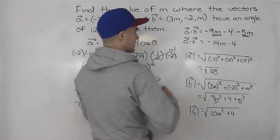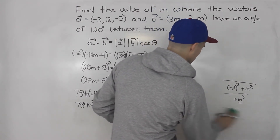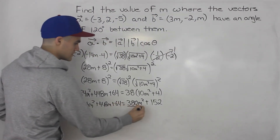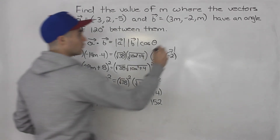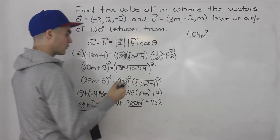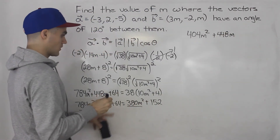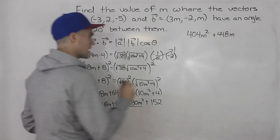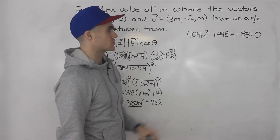We're going to end up with some kind of quadratic equation. Bringing everything to the left side: 784 minus 380 gives 404m squared. 448m stays the same. And 64 minus 152 gives minus 88. So we end up with 404m squared plus 448m minus 88 equals zero — a quadratic equation.